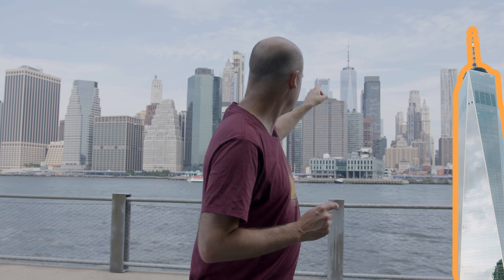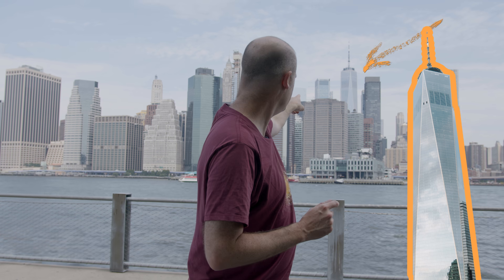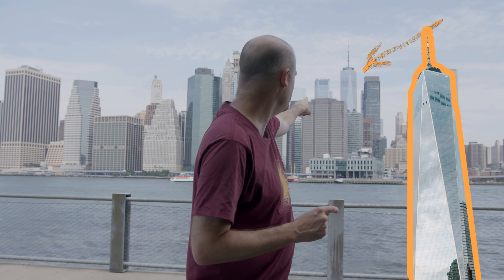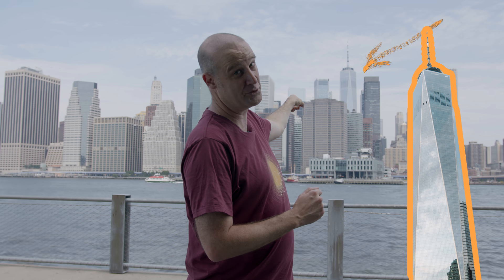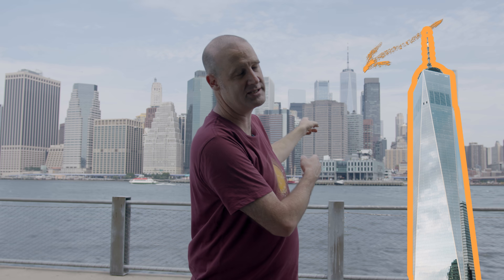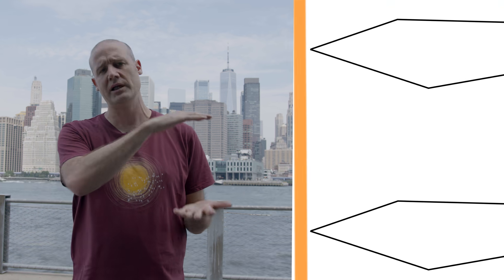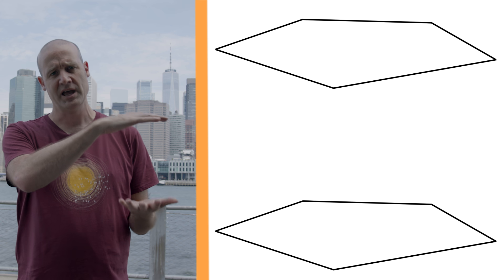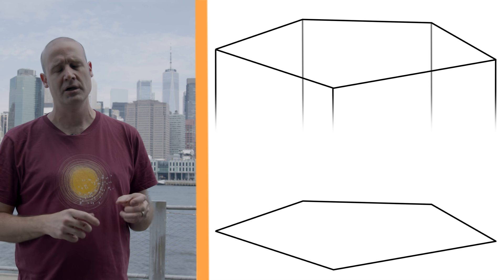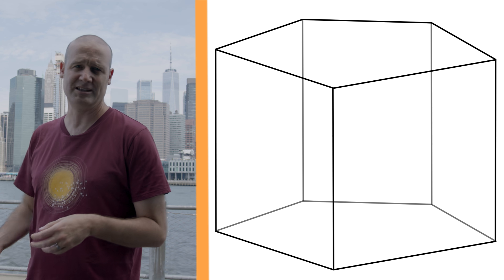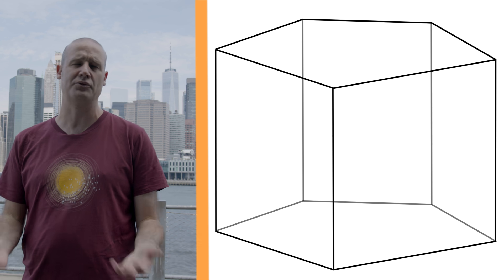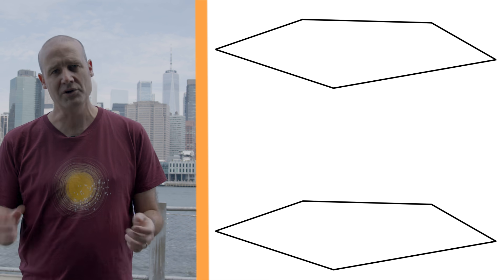Over there, you can just see it behind those cuboids — it's the One World Trade Center anti-prism, and that is a much more exciting shape. A regular prism is when you've got two parallel polygons and you join up the matching sides with rectangles. In the case of a cuboid, it's a rectangular prism. It's the worst of the worst.